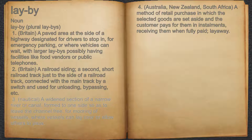3. Nautical: a widened section of a narrow river or canal, formed to one side so as to leave the channel free, for mooring of vessels, where vessels can lay over or allow others to pass.